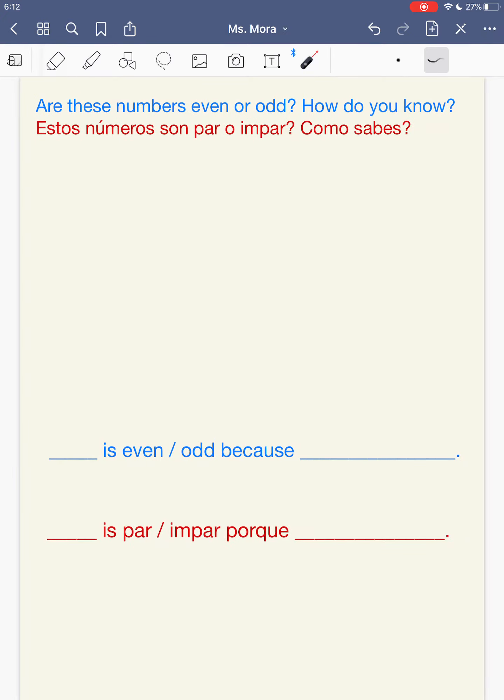Let's do some practice. The question here says, are these numbers even or odd? And how do you know? So we're going to do some writing. I'm going to give you a number, and you're going to say the number is even or if it's odd. You're going to circle even or circle odd. Because, and we have to write our explanation. La pregunta aquí dice, estos números son par o impar? Y como sabes? Aquí vas a poner la razón por qué, es par o impar.